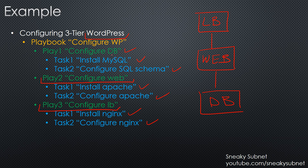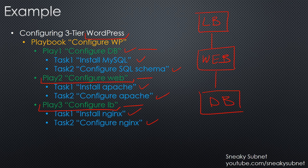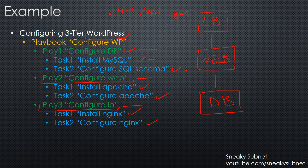So we can conclude that the playbook defines our complete goal — deploy an application, in our case deploy WordPress. A play defines more detailed but still broad actions: configure database, configure web, configure load balancer. A task defines the final and most detailed instructions — for example, install MySQL or configure SQL schema. Remember that Ansible tries to use a declarative model. In our case, it means we do not have to specify the installation method — yum or apt-get, for example — since Ansible will figure out the appropriate method automatically.